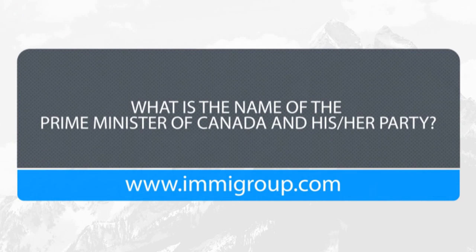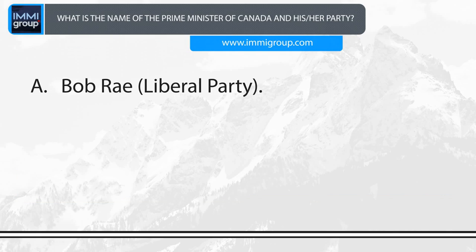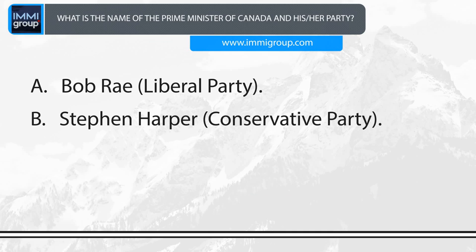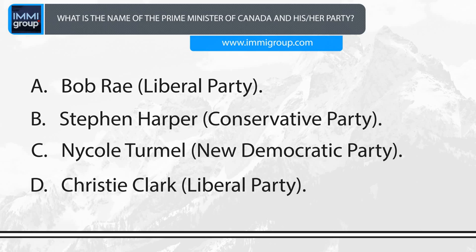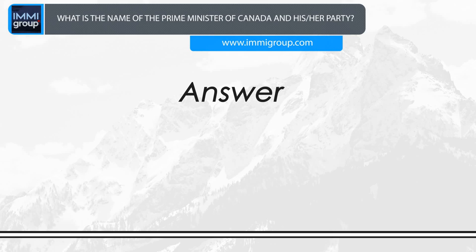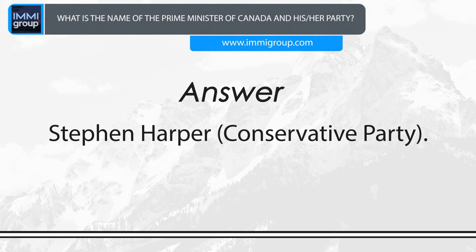What is the name of the Prime Minister of Canada and his party? A. Bob Ray, Liberal Party. B. Stephen Harper, Conservative Party. C. Nicole Turmel, New Democratic Party. D. Christy Clark, Liberal Party. Answer: Stephen Harper, Conservative Party.